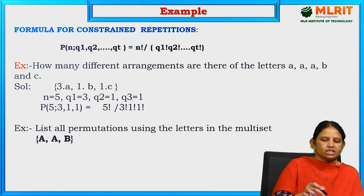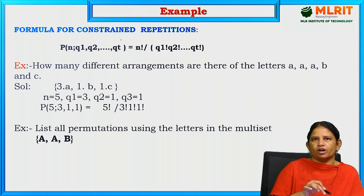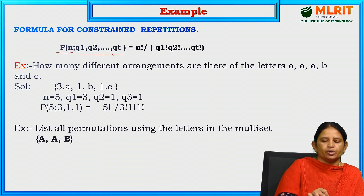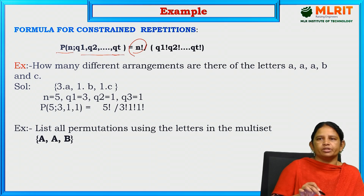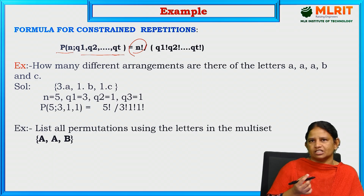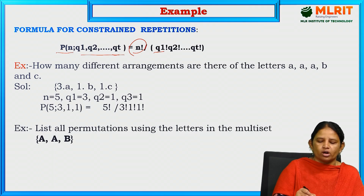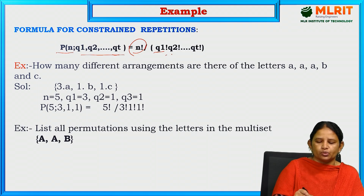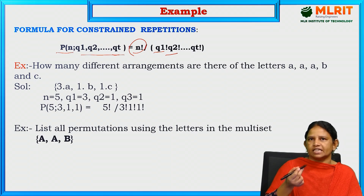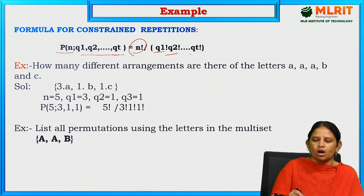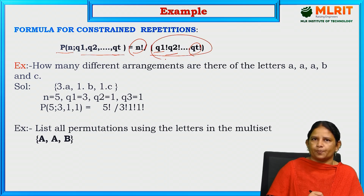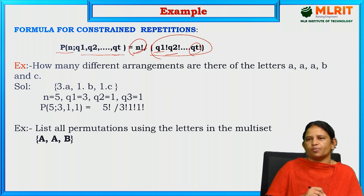Now, coming to permutations. What is the formula for constrained repetition? P of N, Q1, Q2, ..., Qt. N factorial represents the total number of letters. Q1 factorial means how many times the first letter can be repeated. Q2 means how many times the second letter can be repeated, and so on up to Qt. The denominator represents the repetition of the letters in the corresponding word.